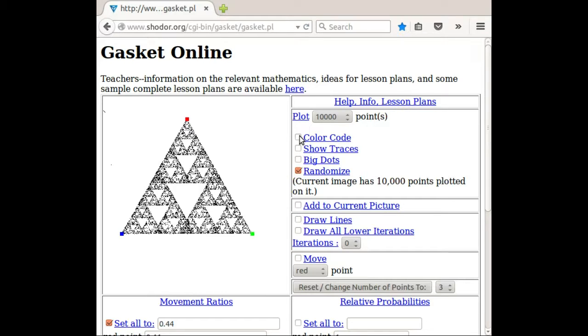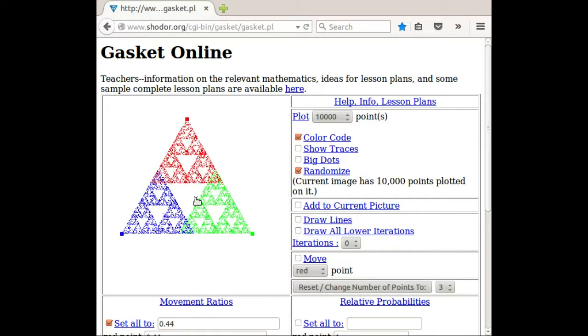We can make this colorful if we click on color code. That will make the top ones red, the left ones blue, the right ones green. That could be a fun thing to play around with.